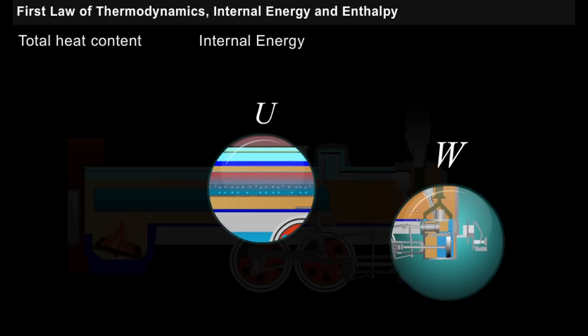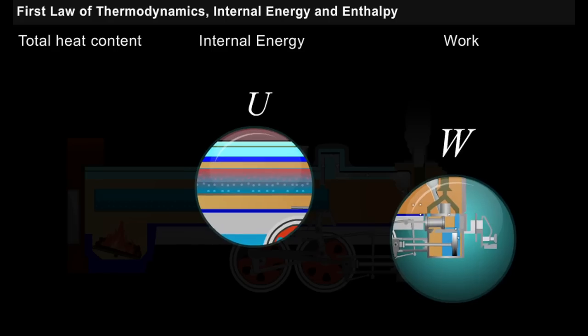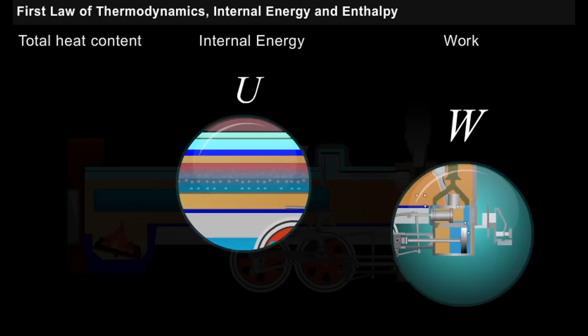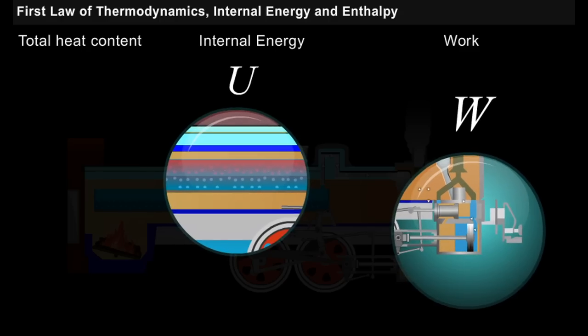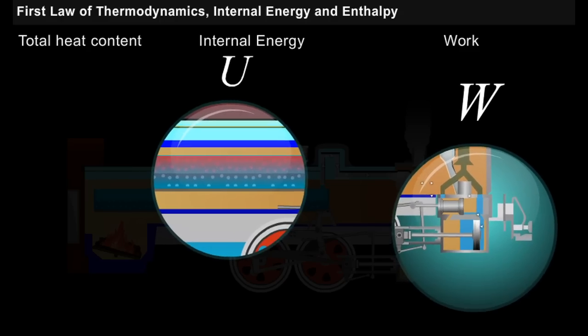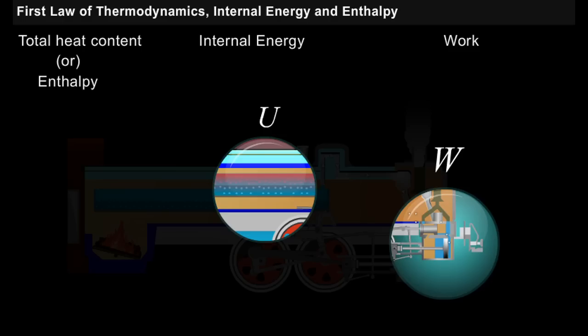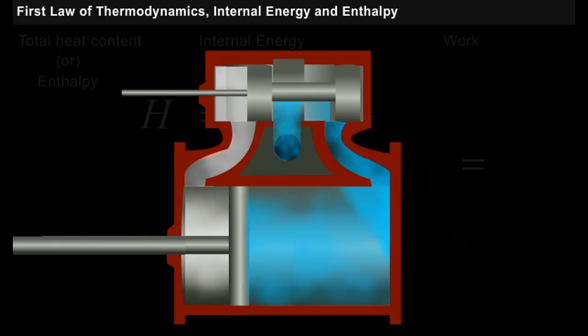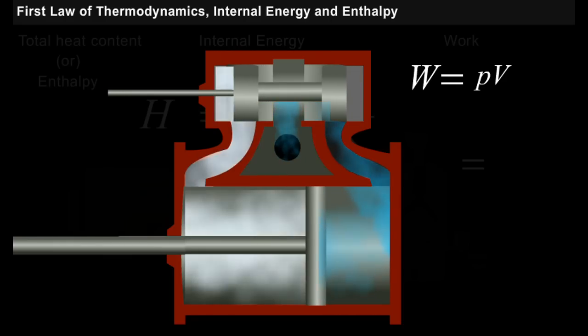As the internal energy and work are two different properties that occur frequently together, they have been added to give a combined property known as enthalpy or total heat content. This total heat content of the system is denoted as H. Work done can be given as the product of pressure and volume.